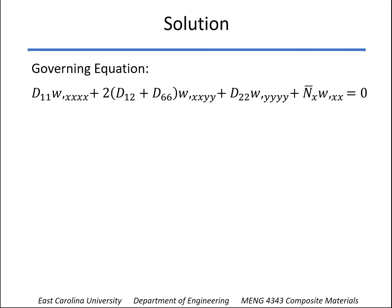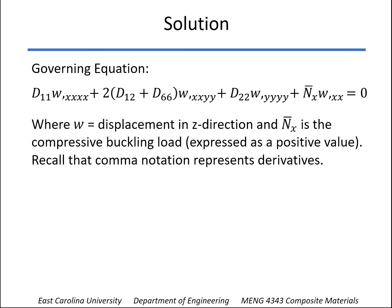Now before we get to that, here's the governing equation. And you can tell it looks pretty complicated here. But all the D terms, the bending stiffness terms, are involved. W is simply the displacement in the out-of-plane or the Z direction. n̄_x, that's going to be the compressive buckling load. Now in this formulation, it shows as a positive value, even though it's a compressive load.